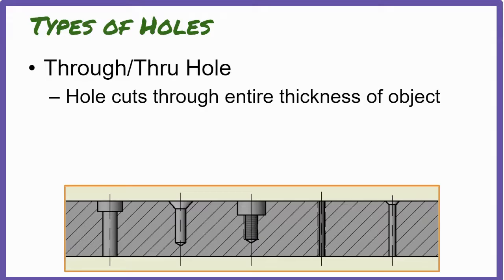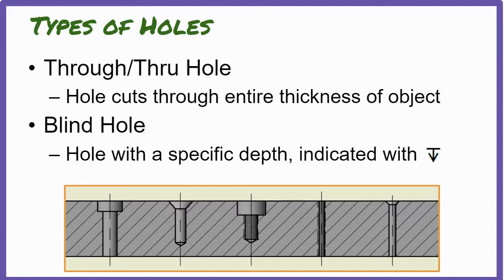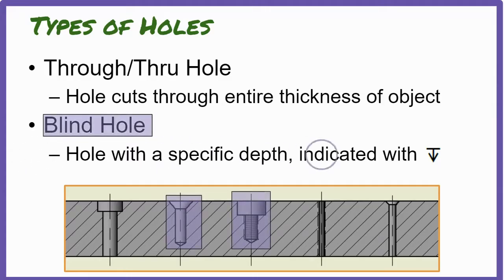When a hole cuts all the way through an object, we call it a through hole. A hole that doesn't cut all the way through an object is called a blind hole. Blind holes have a specific depth which is indicated on drawings using the depth symbol.